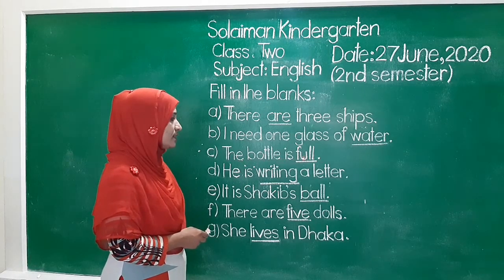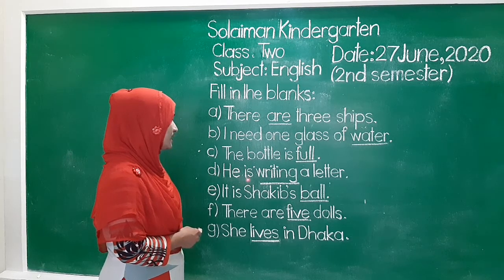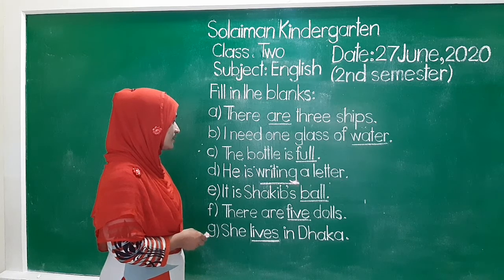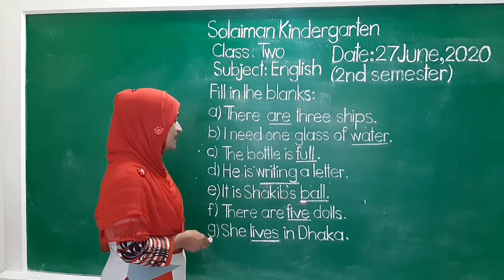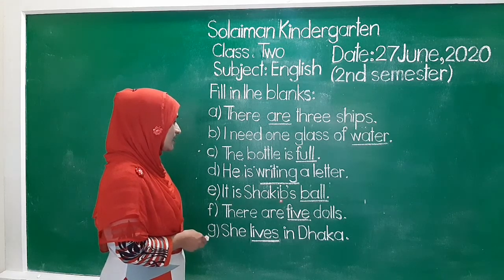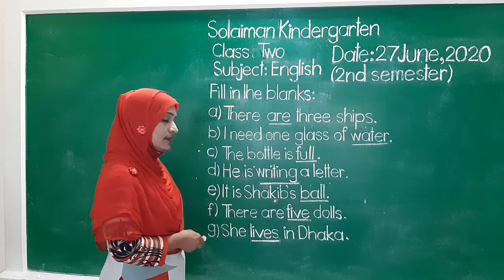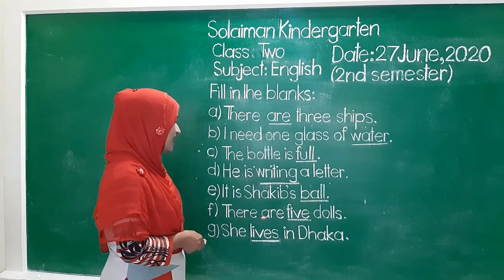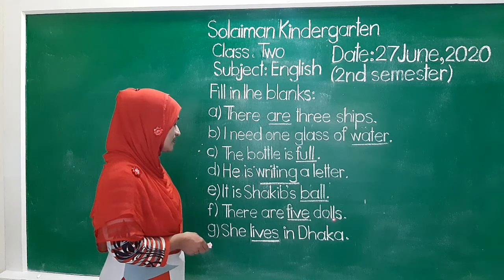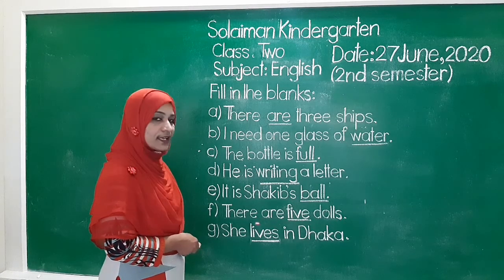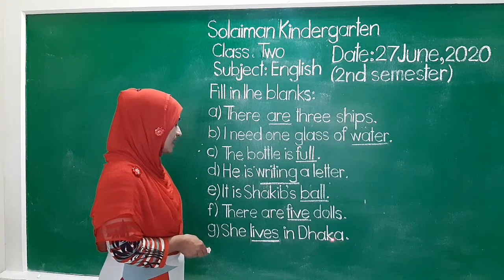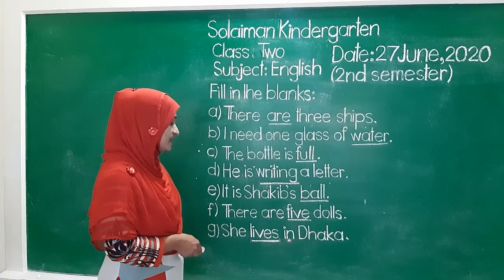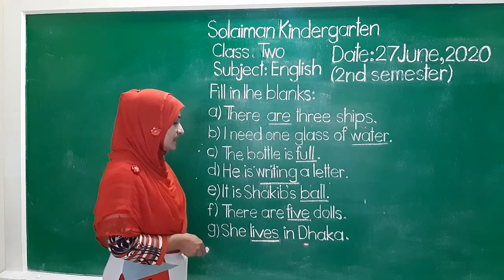Let us review. The bottle is full. D number: E is writing a letter. E number: It is Sakit's ball. There are five dolls. G number: She lives in Dhaka.